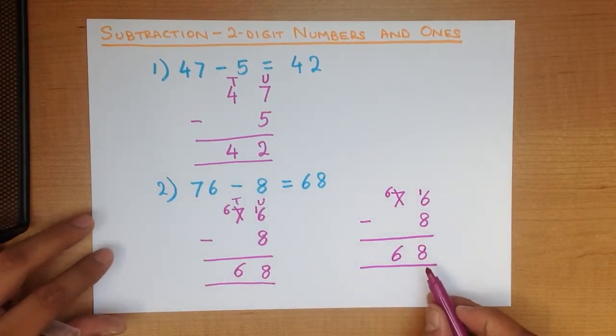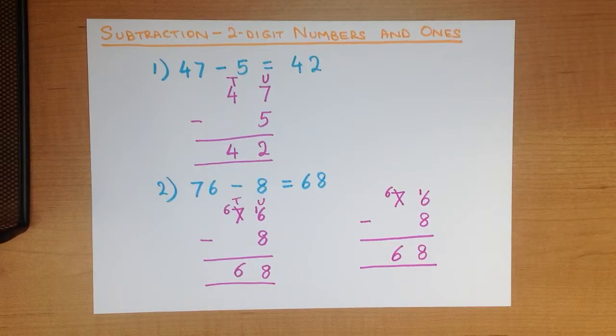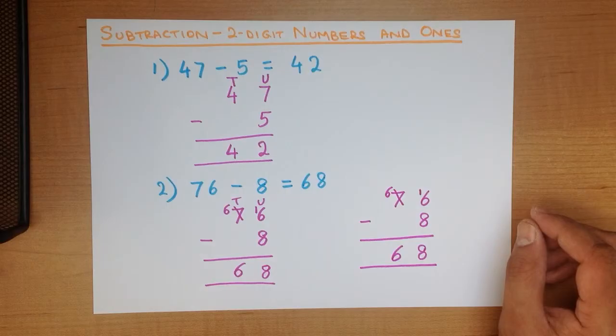And that is our answer. 76 minus 8 equals 68. And that is subtraction of 2 digit numbers and ones using the vertical format.